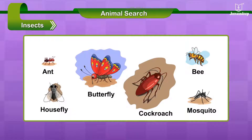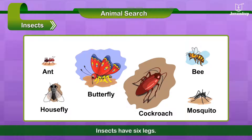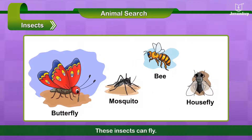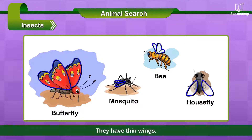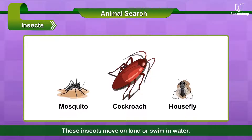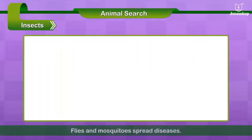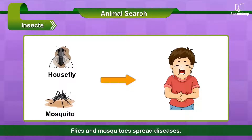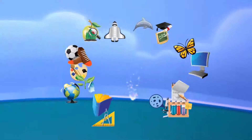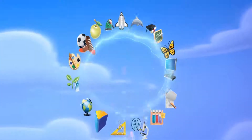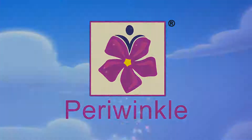Insects. There are many insects around us. They have six legs. Some insects can fly — they have thin wings. Others move on land or swim in water. Flies and mosquitoes spread diseases.